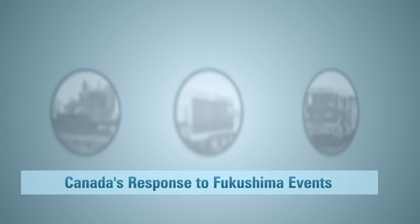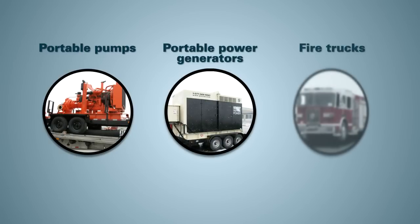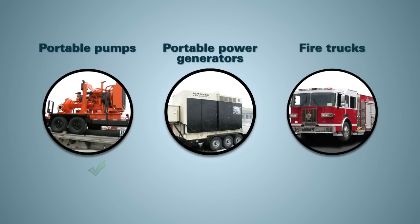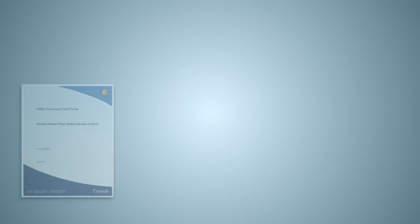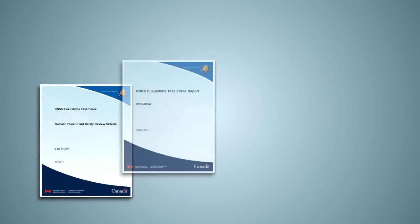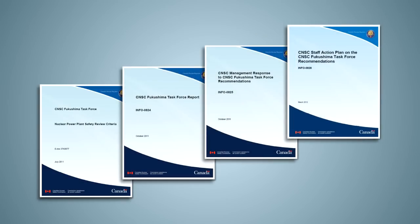Emergency mitigation equipment includes portable pumps, portable power generators, and fire trucks. These can be used to add water directly into the plant's systems and ensure vital monitoring equipment is available. This is a new layer of protection that was added to Canadian nuclear power plants as part of Canada's response to the accident in Japan.